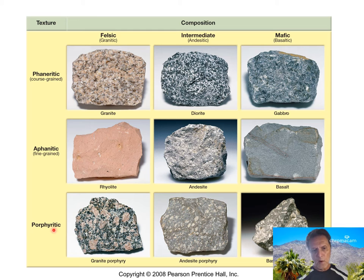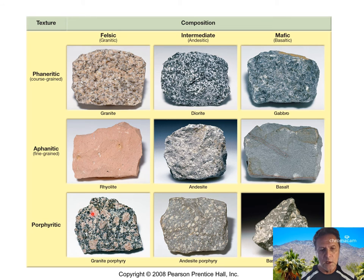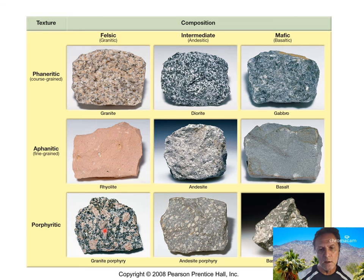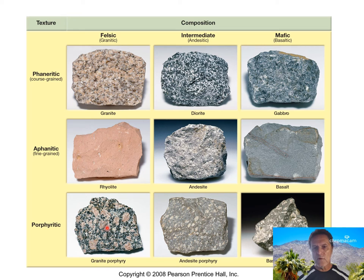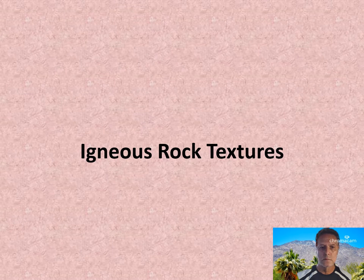'Porphyritic' means two stages of cooling. The rock sat underground for some time and formed large crystals, then was erupted toward the surface and the remainder cooled quickly, forming finer crystals surrounding the coarser grains. So this chart covers texture, grain size, cooling rates, and cooling environment: phaneritic coarse-grained rocks are intrusive; aphanitic fine-grained rocks cool at the surface.